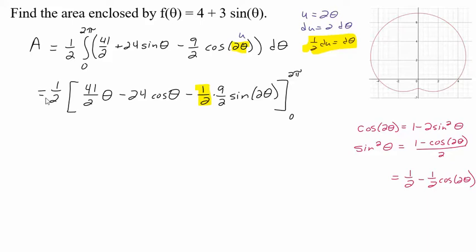All right, I think we're in the home stretch. Let's see, so now we're going to plug in 2 pi and 0. So I'm going to have one half times 41 over 2 times 2 pi minus 24. Let's just do this in our head: the cosine of 2 pi is 1. Minus 9 fourths, that right here 9 fourths, so the sine of 4 pi is the same as the sine of 2 pi, which is the same as sine of 0, which is 0.